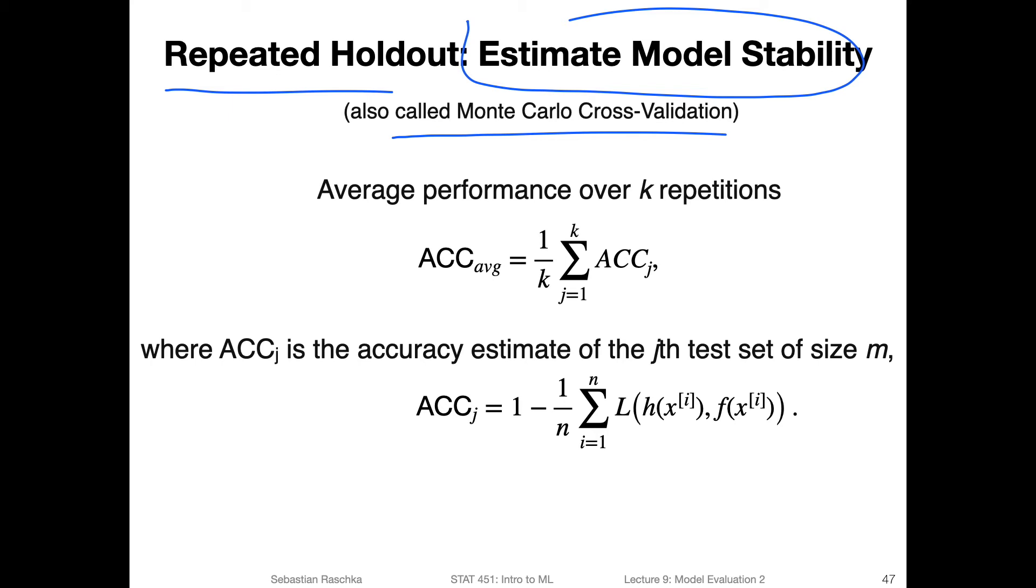So this method is also known as Monte Carlo cross-validation. And it can also to some extent help us to estimate the model stability, so how sensitive is the model towards different training sets, or in general to the data set splits, how we split the data. So if you, for example, have the iris data set and you split into training and test, which examples end up in the training and test depends on the random seed. So how sensitive is the model to these types of splits. So here I was just writing out the averaging, but I think it should be pretty straightforward. If this is the accuracy of a single model on the test set, if we repeat the holdout method k times, we have the sum over k accuracies and then just average.